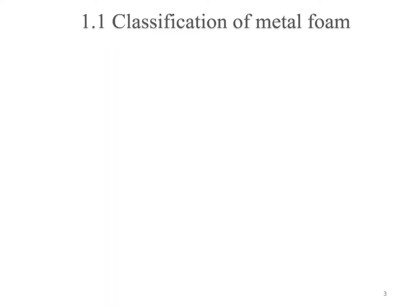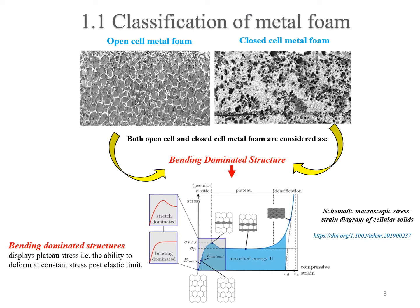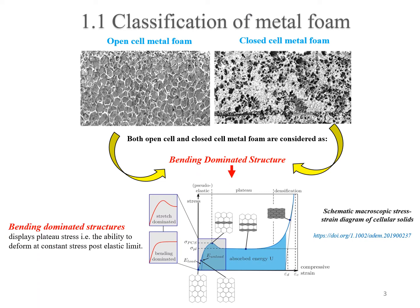Based on solid volume fraction, metal foam is usually classified as open cell metal foam, as shown on the left, and closed cell metal foam, as shown in red. In the case of open cell foam, there are just edges and no membranes covering the faces, whereas in closed cell foam, there are membranes that cover the faces of the cell. Irrespective of their classification, these materials are considered bending dominated structures — that is, they deform at constant stress post-elastic limit.